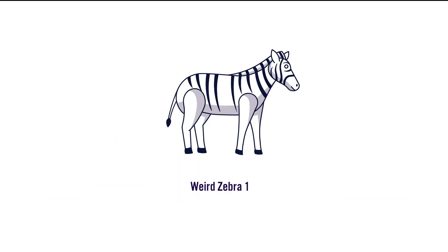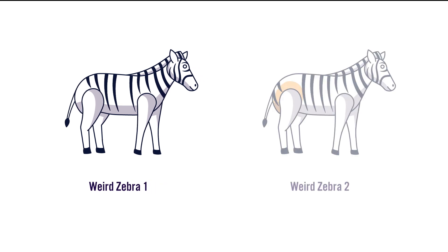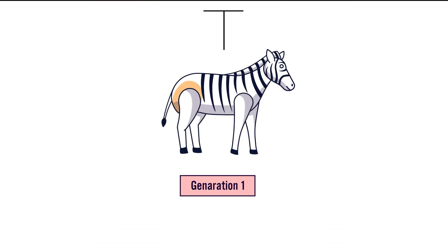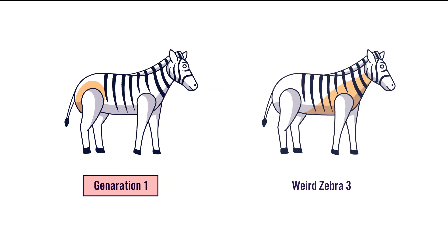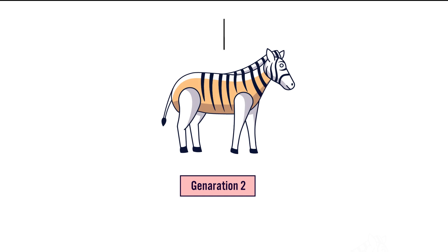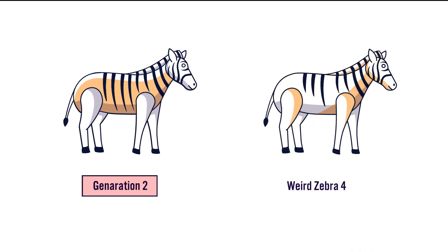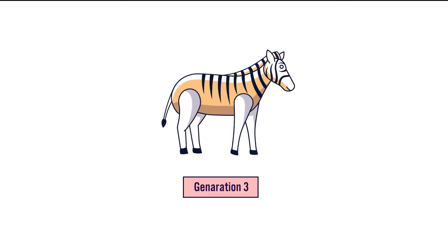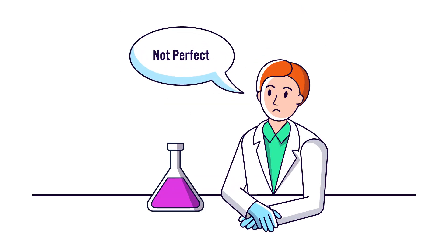The last method, backbreeding, involves selectively mating animals that still carry some traits of an extinct species. Through careful selection over several generations, these traits can gradually become more pronounced, ultimately leading to a living animal that looks and behaves much like the long gone species. However, it won't be a perfect genetic match.